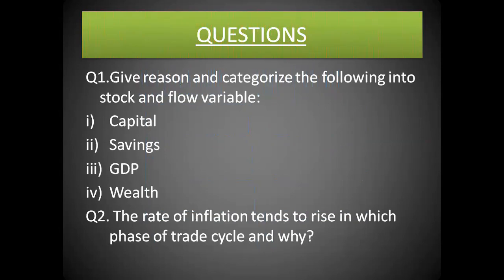These are the two questions to do after this lecture. First, classify capital, savings, GDP, and wealth into stock or flow variable and give reasons. Second, in which phase of trade cycle does the rate of inflation tend to rise, and why? Thank you guys, I hope you have understood it well. In the next video, we'll be covering the aggregate demand and aggregate supply concept.